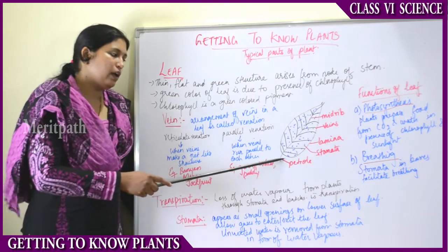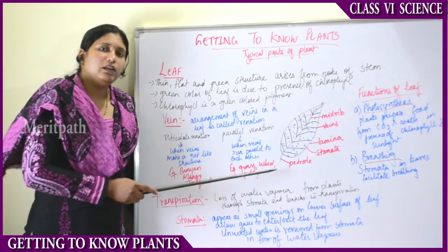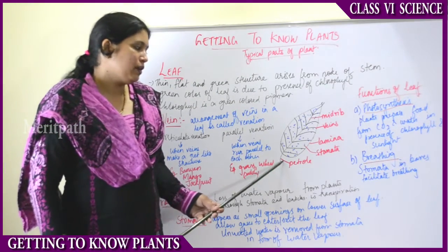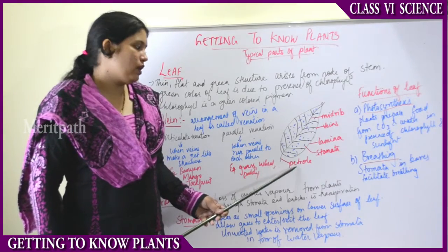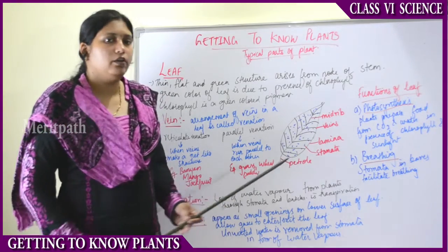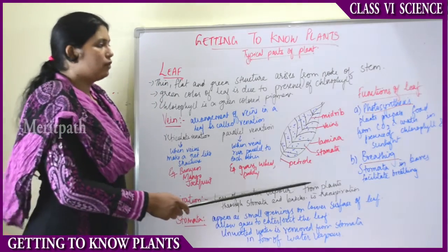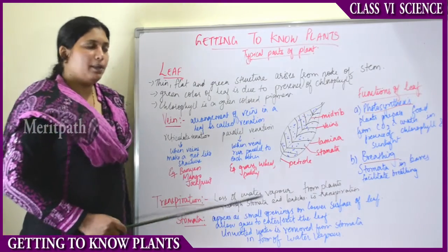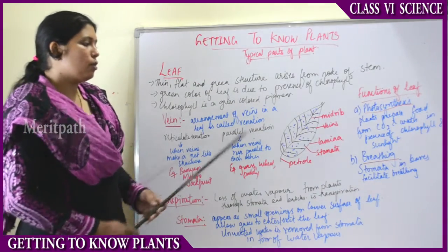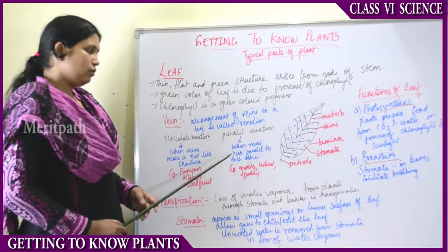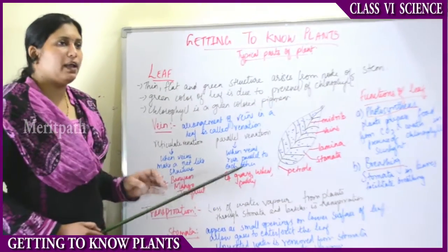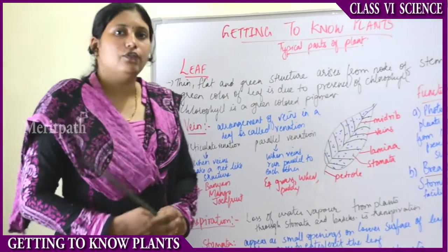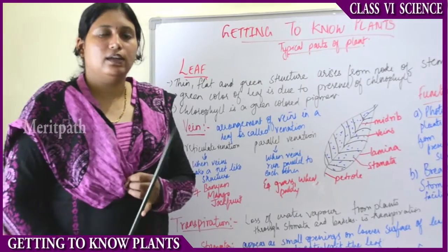The lower part of the leaf, where the leaf starts from the stem, is known as the petiole. So the different parts of the leaf are: midrib, veins, lamina, stomata, and petiole. The main function of the leaf is photosynthetic activity, meaning it prepares food for the plant.